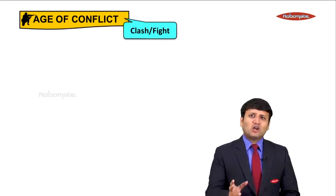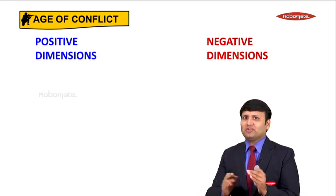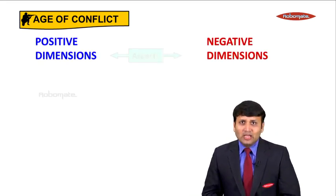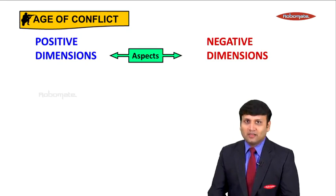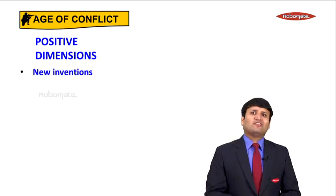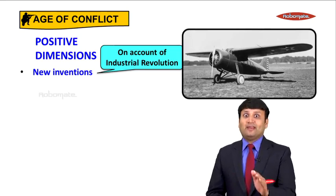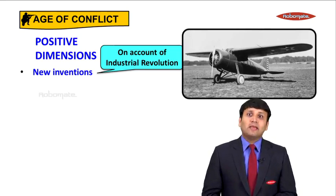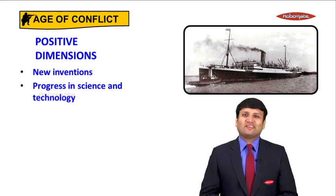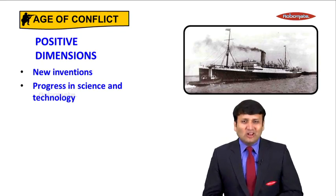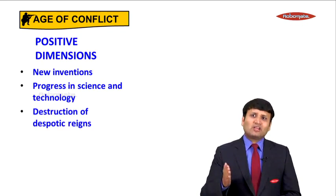A conflict is a clash or a fight. These conflicts in the 20th century had certain positive dimensions and certain negative dimensions. Dimensions are nothing but aspects. On the positive side, a lot of new inventions happened in the 20th century on account of the Industrial Revolution — for example, the airplane was invented for the first time and man could fly from one place to another. This came about because of progress in science and technology.